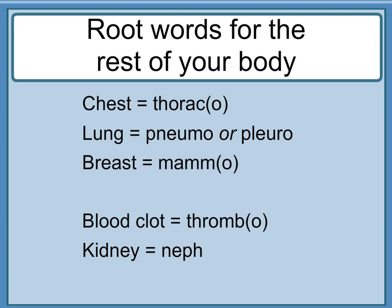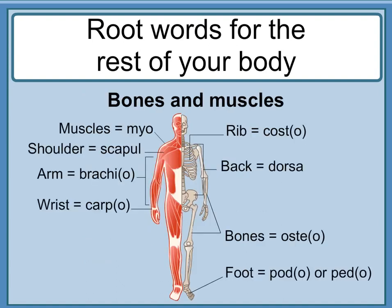Root words for the rest of your body: chest is 'thorac-' or 'thoraco-'; lung is 'pneumo-' or 'pleur-'; breast is 'mam-' or 'mammo-'; blood clot is 'thromb-' or 'thrombo-'; kidney is 'neph-'. For bones and muscles: muscle is 'myo-'; shoulder is 'scapul-'; arm is 'brachi-' or 'brachio-'; wrist is 'carp-' or 'carpo-'; rib is 'cost-' or 'costo-'; back is 'dors-'; bones are 'oste-' or 'osteo-'; foot is 'pod-', 'podo-', 'ped-', or 'pedo-'.